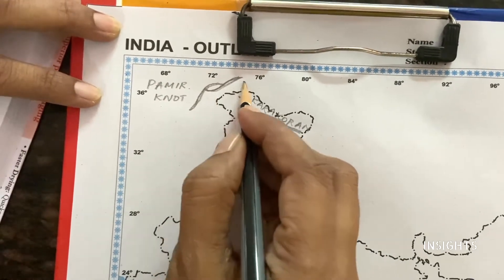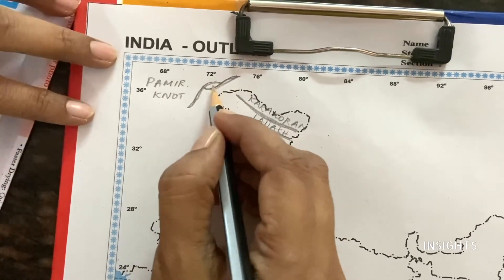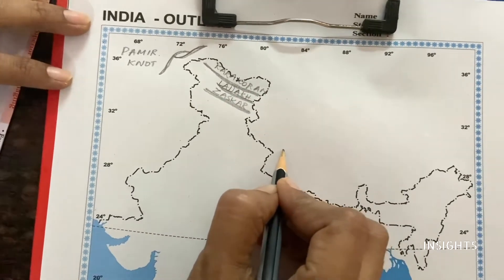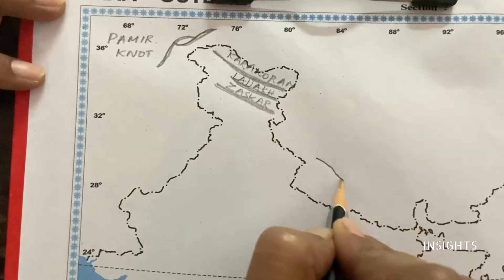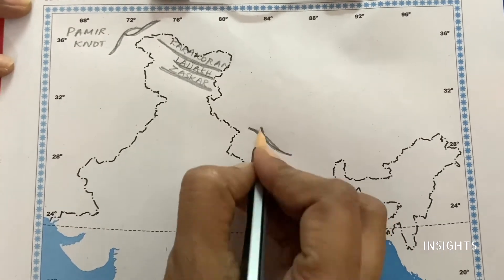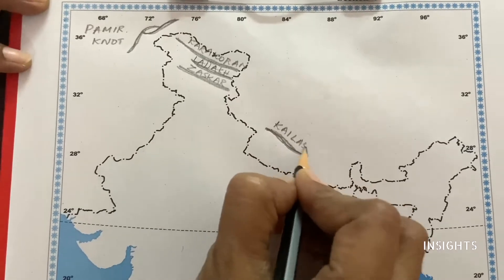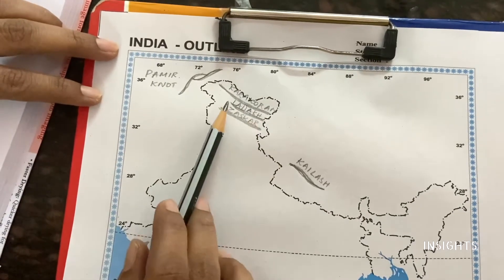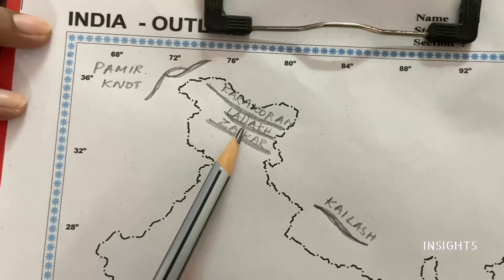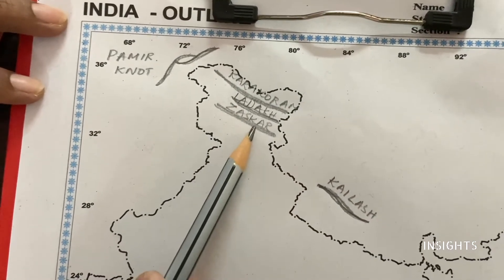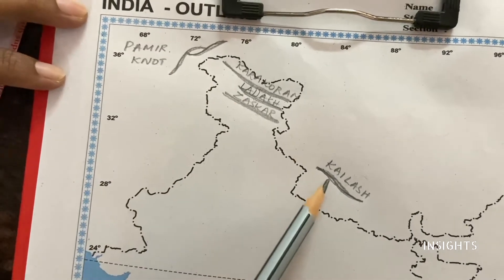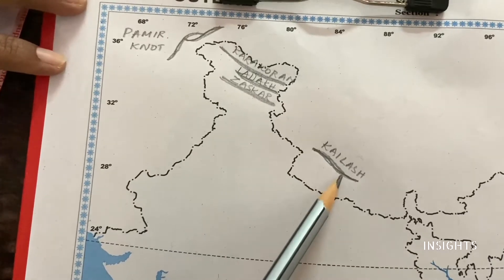Pamir Knot is actually a range of hills in the formation of a knot. Then another question asked is the Kailash Range — you must have heard of Kailash, the abode of Lord Shiva. So here is the Kailash Range. When it comes to North India, the important ranges are Karakoram, Ladakh, Zaskar, Pamir Knot, and Kailash Range.